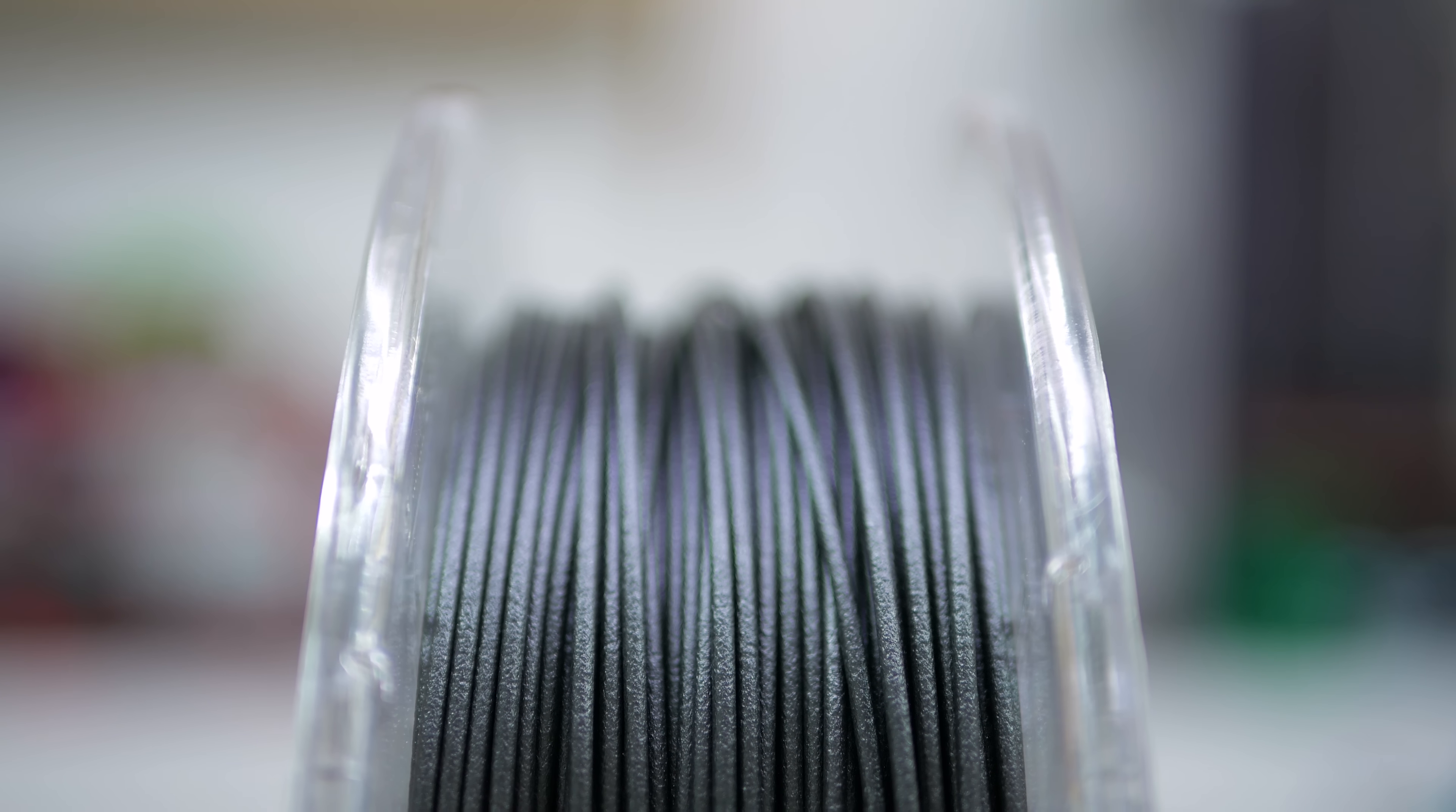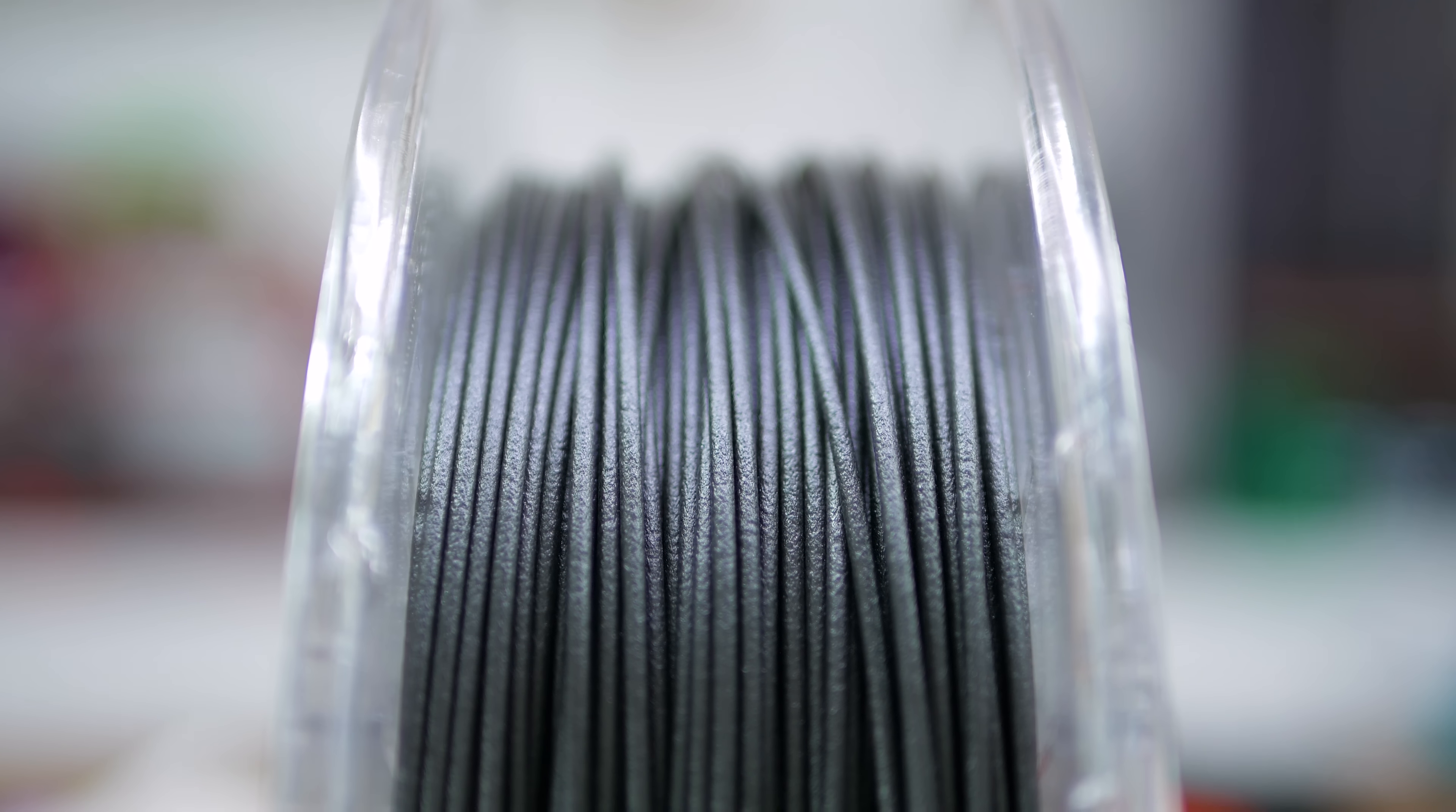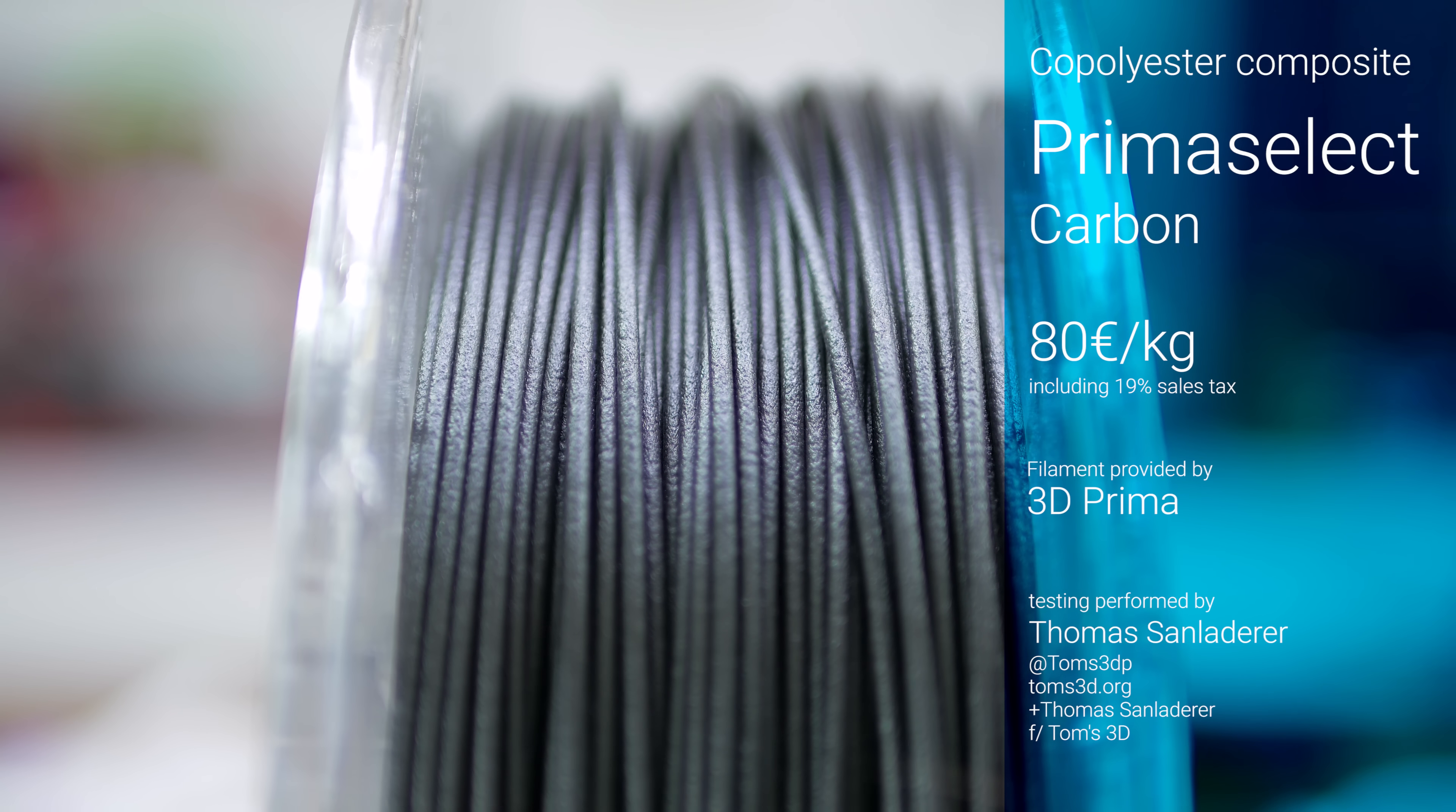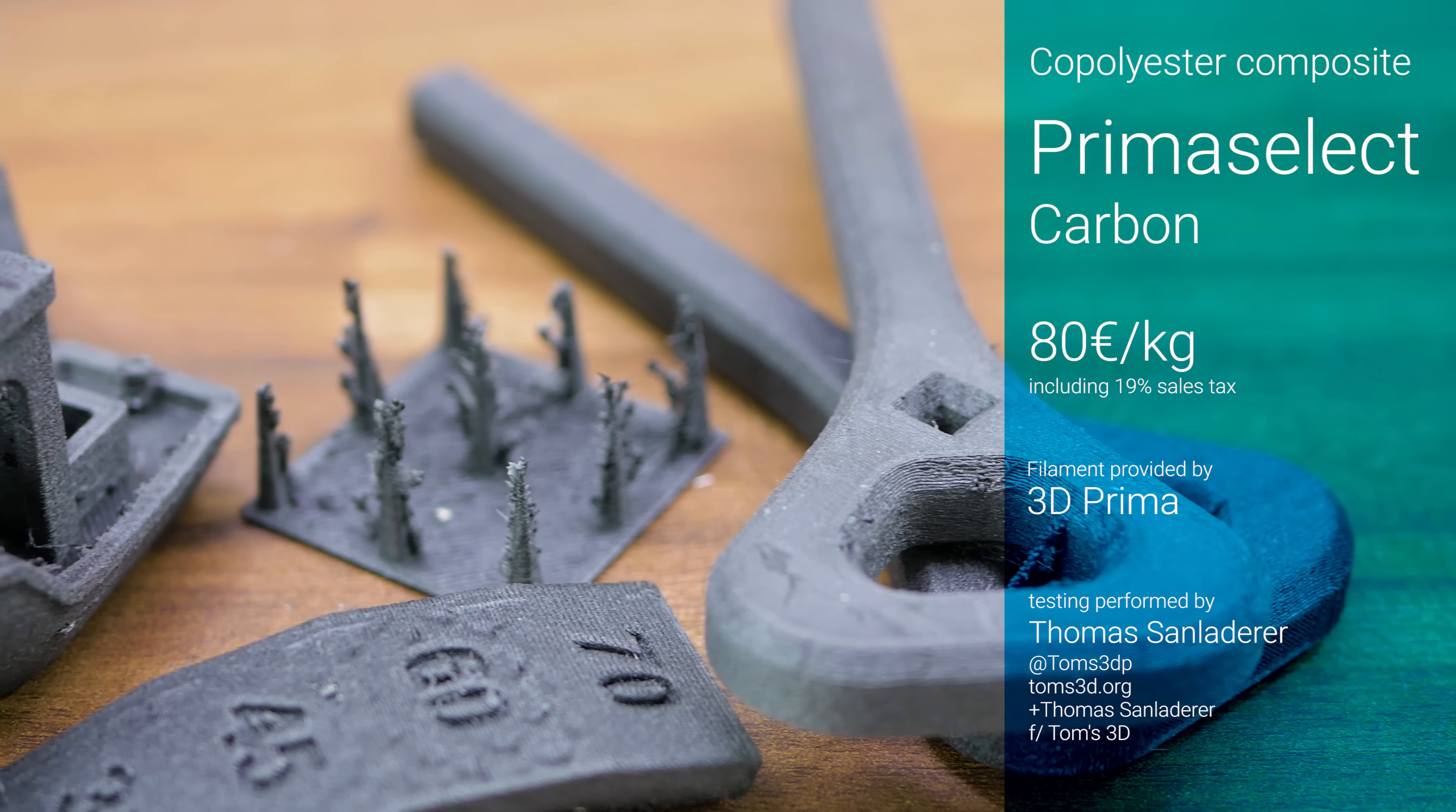Carbon fiber is a composite partner you can add to practically any material, but the results will vary depending on how suitable the match is. 3D Prima decided to use it to spice up their PETG filament, creating the 80 euro per kilogram Prima Select Carbon.